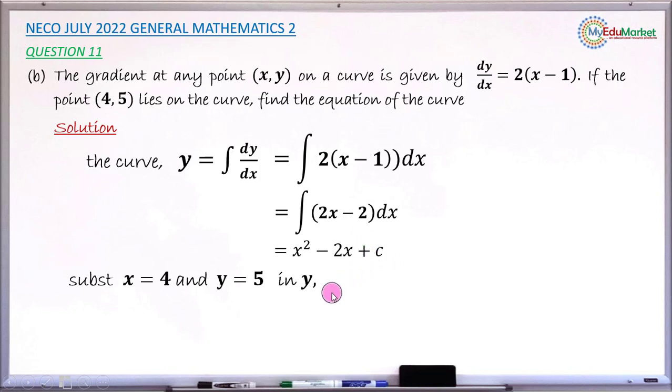So if you now substitute x by 4, y by 5 in here, you now have 5 equals. In place of y, you now put 5 there because this is y equals x squared minus 2x plus c. So you have 5 equals x squared.